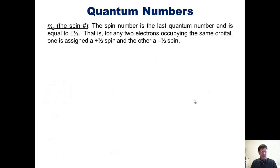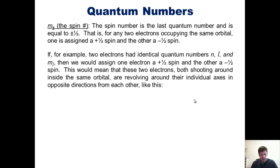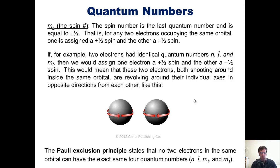The fourth quantum number is m sub s, called the magnetic spin number. The spin number is the last quantum number and is equal to positive or negative 1 half. That is, for any two electrons occupying the same orbital, one of them gets assigned a plus 1 half spin, and the other gets assigned a minus 1 half spin. If, for example, two electrons had identical quantum numbers n, l, and m sub l, then we would assign one electron a plus 1 half spin, and the other a minus 1 half spin. This would mean that these two electrons, both shooting around inside the same orbital, are revolving around their individual axes in opposite directions from each other, like this. It's important that we have this final fourth quantum number, the m sub s number, or else we couldn't explain how two electrons can simultaneously occupy the same orbital. Why? Because of the existence of something called the Pauli Exclusion Principle, which states that no two electrons in the same orbital can have the exact same four quantum numbers.